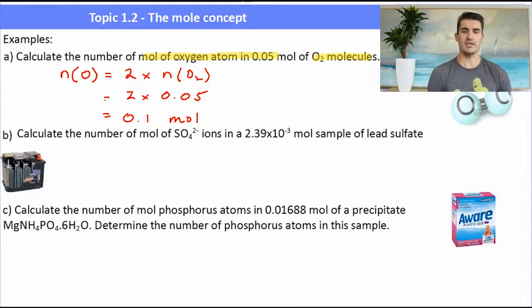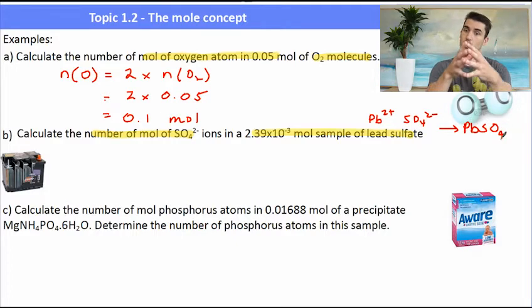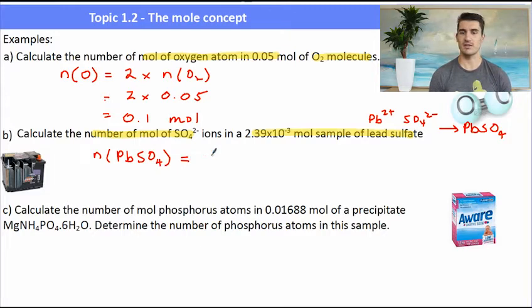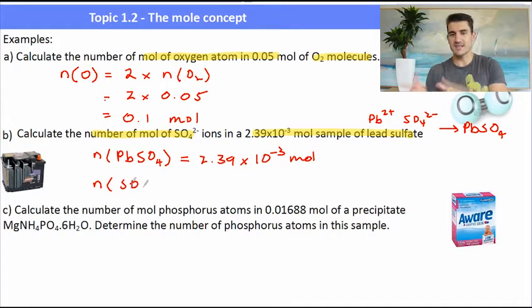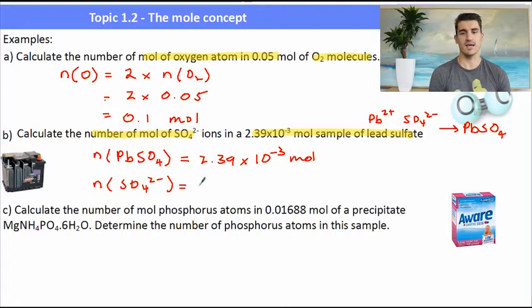For the second one, B. Calculate the number of moles of sulfate ions in a sample of lead sulfate. So we need to know the formula for lead sulfate. Pb2+ SO42- gives us the symbol PbSO4. So in one PbSO4 molecule, we have one lead ion and one sulfate ion. So the number of moles of PbSO4 is equal to 2.3 times 10 to the minus 3 mole. And we need to just work out the number of mole of sulfate. So the number of moles of sulfate will be the same as the number of moles of PbSO4. Because it's a one to one ratio. There's one lead and one sulfate. So the number of moles will be the same.